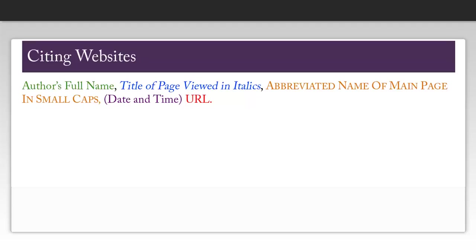You also should look for the date and time of publication. If this is not available, you should put the last updated date, the copyright date, or the visit date after the URL rather than before. After the date and time of publication, you will put the URL.